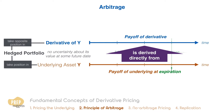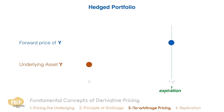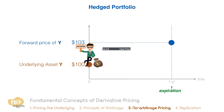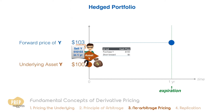To understand the concept of hedged portfolios, let's go through an example. Let's say there's an asset that's traded at $100 at time zero. At this time, a forward contract that expires in exactly one year is priced at $103. An example of a hedged portfolio is if an investor longs the underlying asset at $100 at time zero and simultaneously enters a short position of the forward at a contract price of $103.